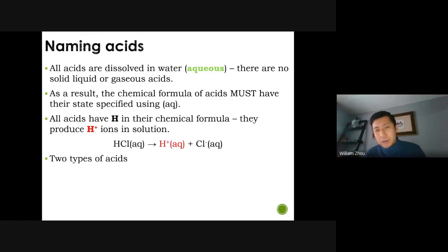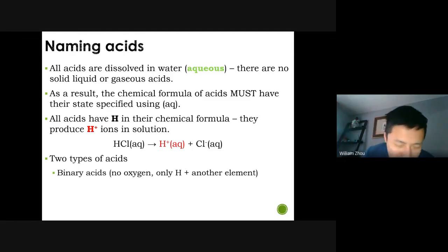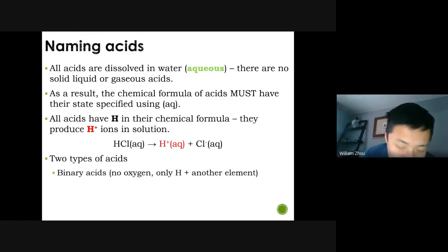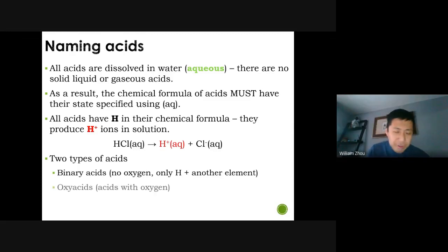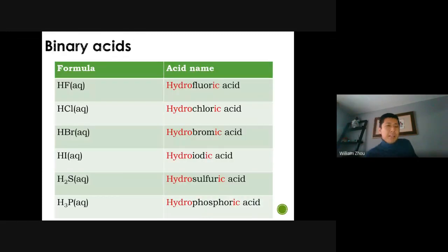There are two types of acids and they have different naming rules, so you need to distinguish between them. The first type is what we call a binary acid — binary means two. A binary acid only has hydrogen plus something else, another element. Binary acids don't have oxygen at all. If you see oxygen, it is not a binary acid — it will be an oxy acid: acids with oxygen. So there are two types: the ones without oxygen and the ones with oxygen. Just look for the oxygen.